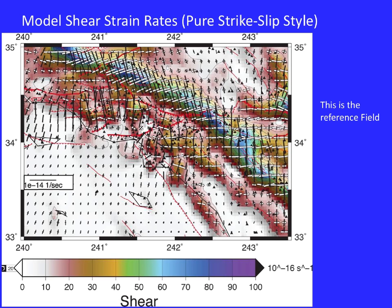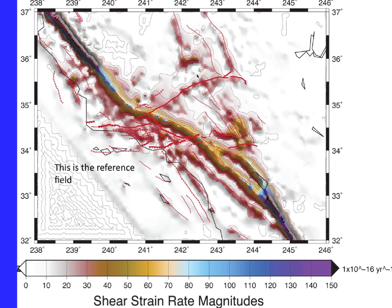The strain field has a lot of interesting features. It has the major obvious strike-slip shear zone that is the San Andreas. The principal axes of strain are shown—bold for compressional, open arrows for extensional. The contoured component is the magnitude of pure strike-slip deformation, clearly showing the San Andreas and the San Jacinto standing out in the shear strain rate component.